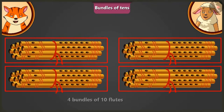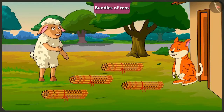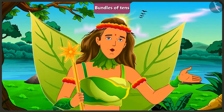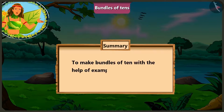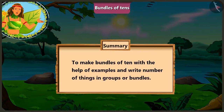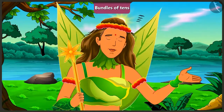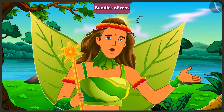Now there are four bundles of ten flutes each, meaning forty flutes in total. Well done, Billy. Children, through these interesting examples you would have well understood how to make bundles of tens and write the sum of objects in a bundle or group. In the next video, we will understand the mistakes we make while finding the total number of objects in a bundle of ten.